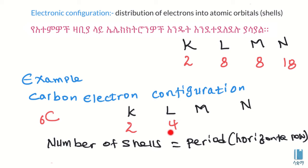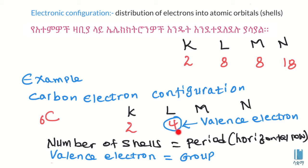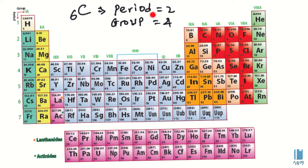The outermost shell is related to the period. Valence electrons are the electrons in the outermost shell and are related to the group. A valence electron means an outermost electron. Carbon's valence electrons determine its group, and its number of shells determines its period.